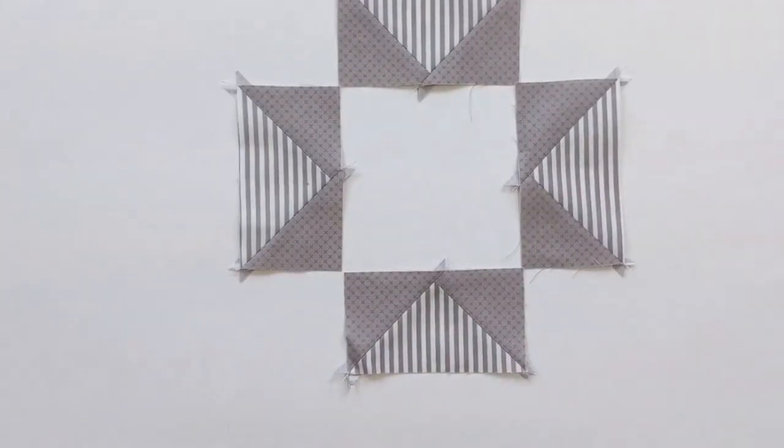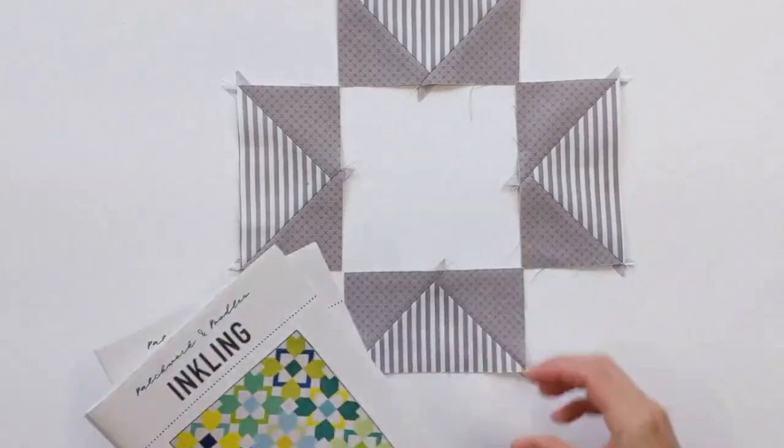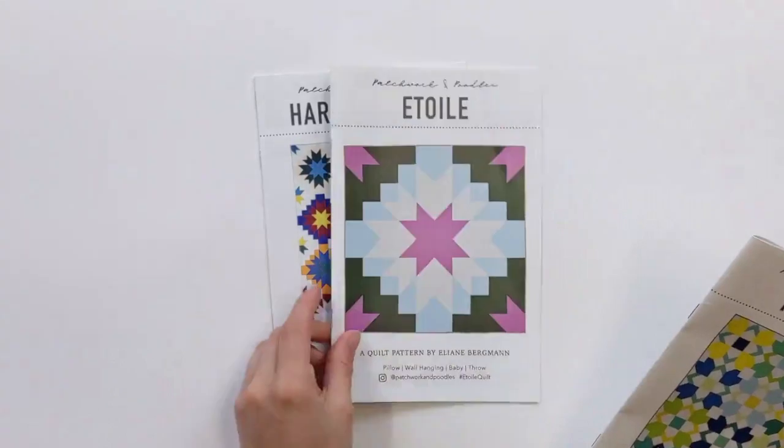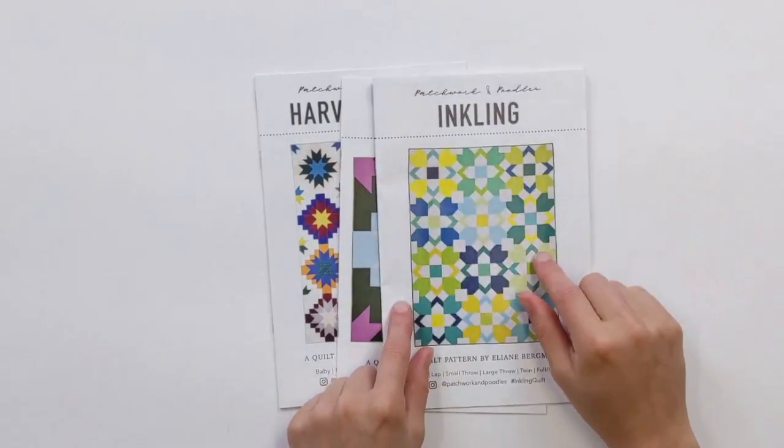There are several Patrick and Poodles patterns that ask for four at a time flying geese. We have Harvestar, Etoile, and Inkling.